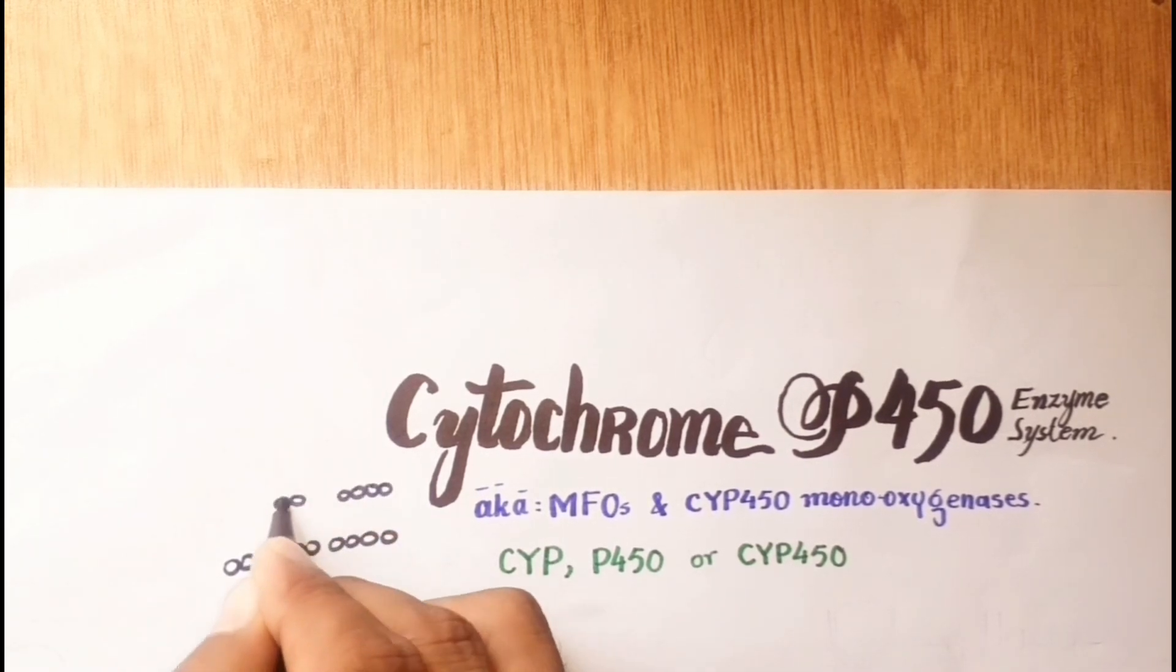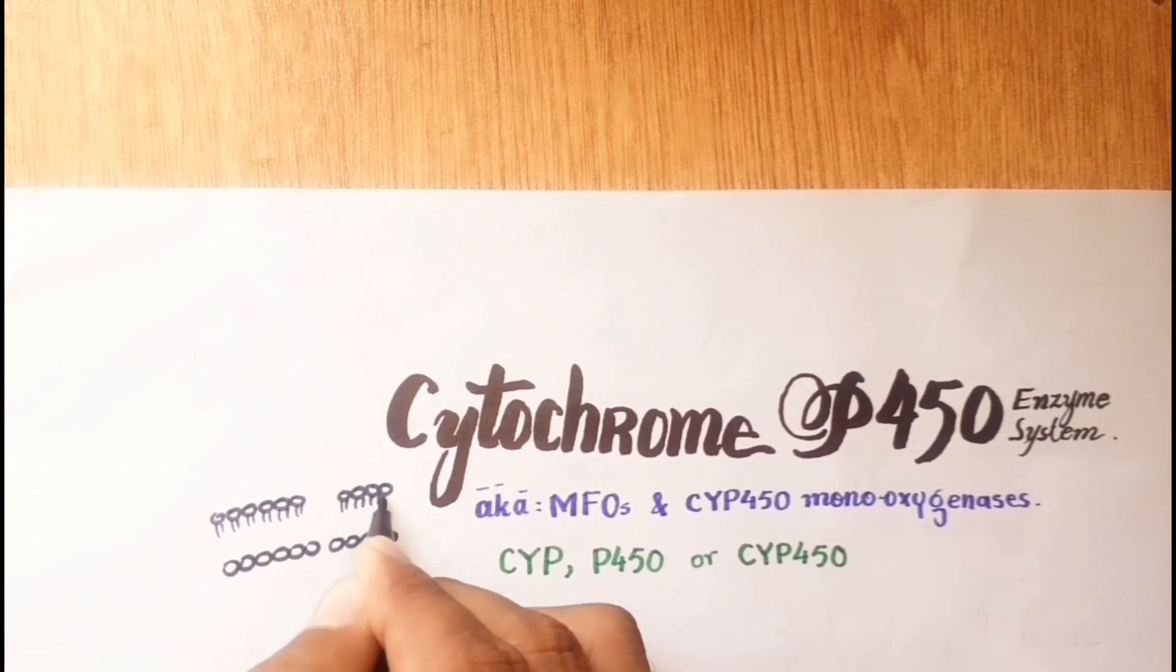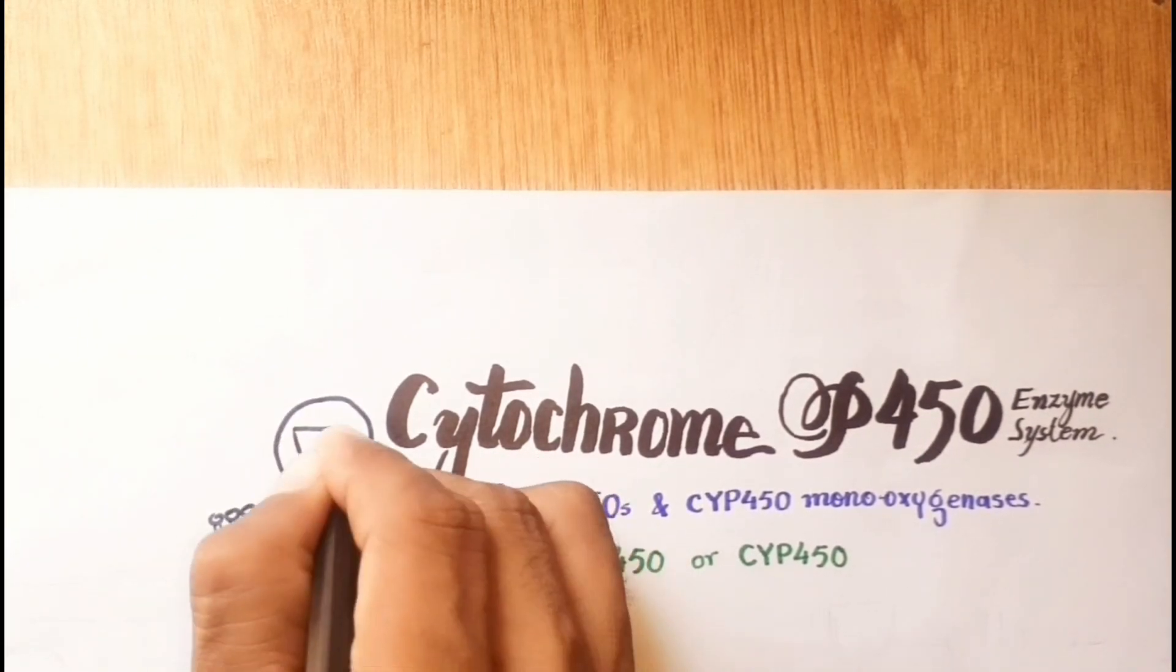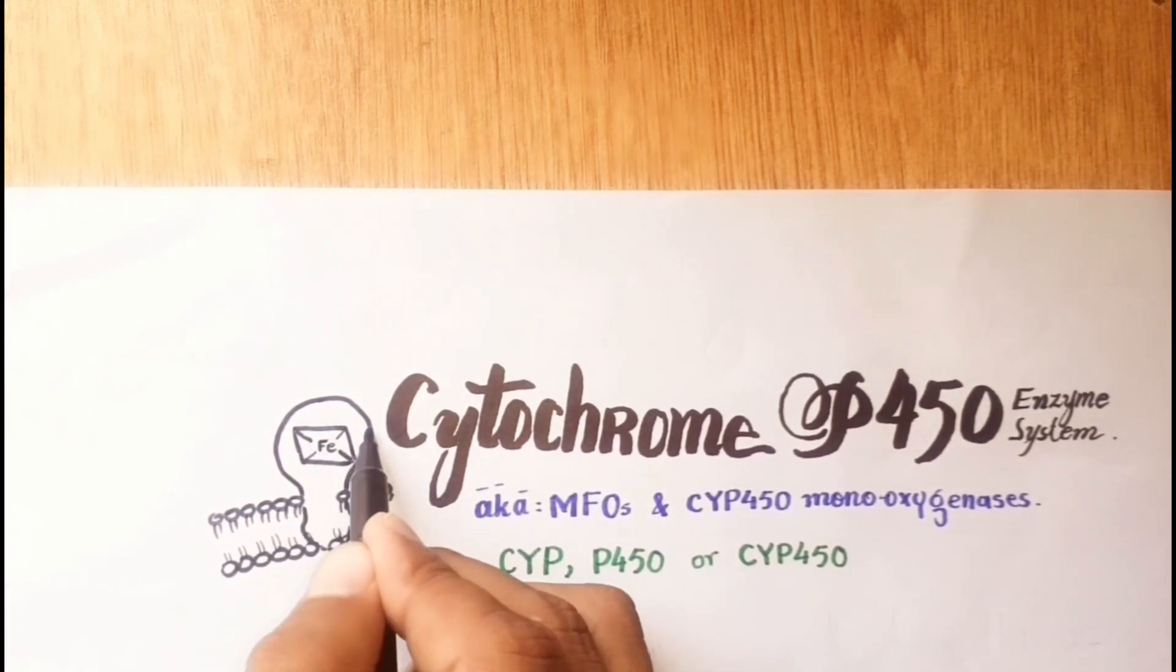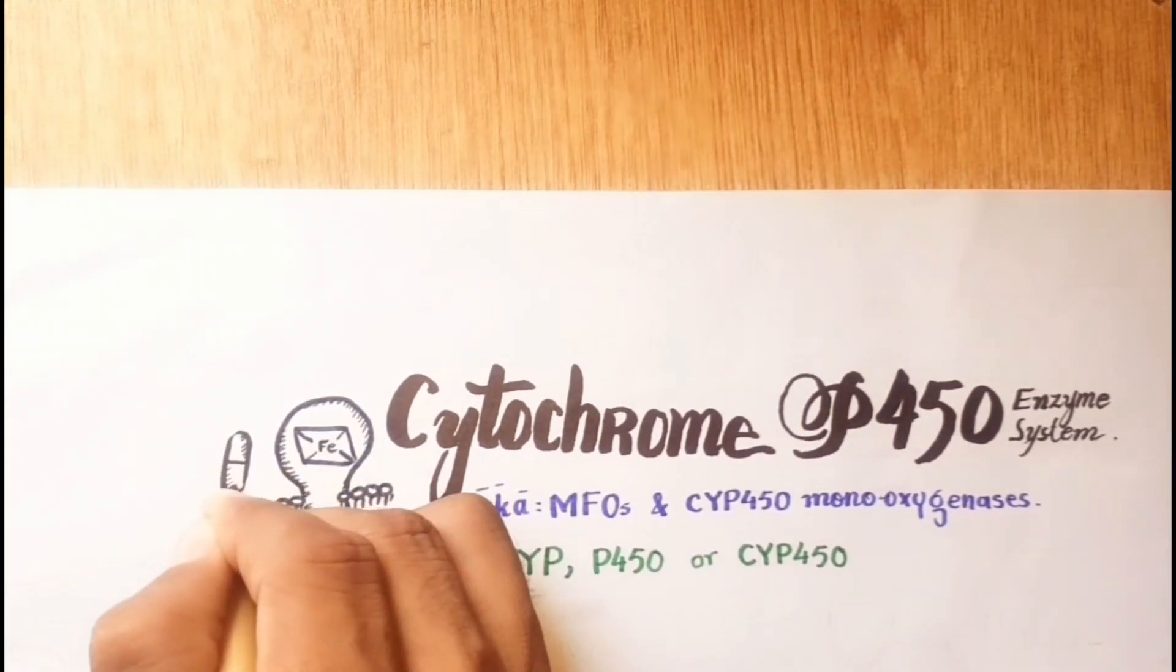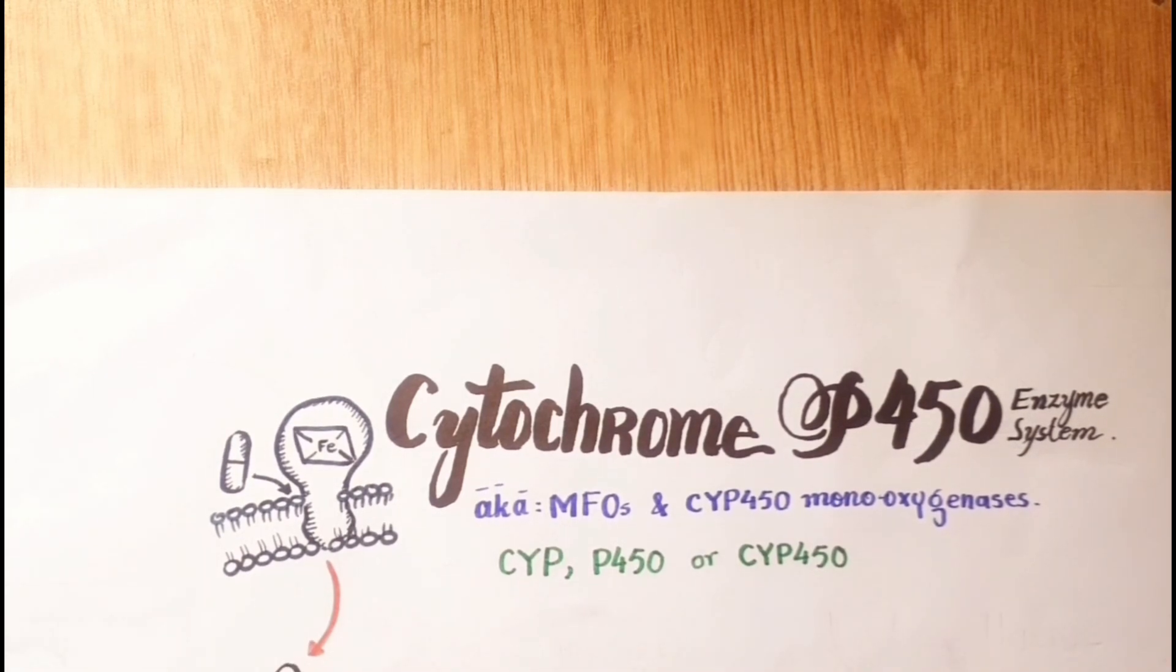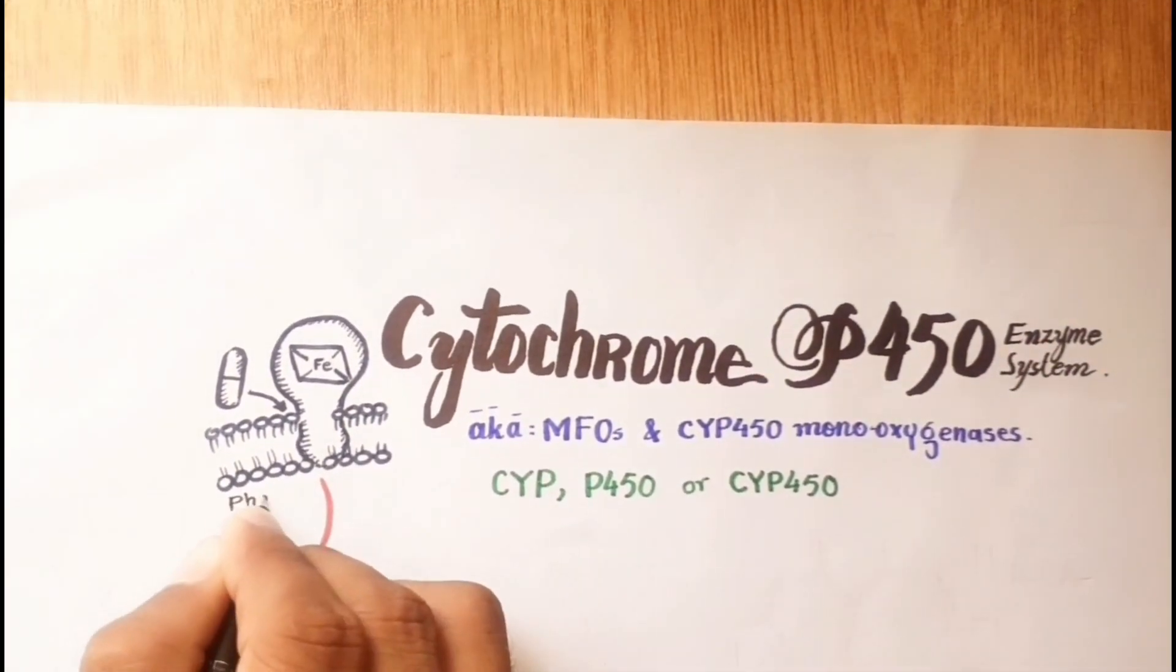The CYPs are a super family of isozymes made of heme proteins that catalyze most of the phase 1 oxidation reduction processes of drugs metabolic reactions.